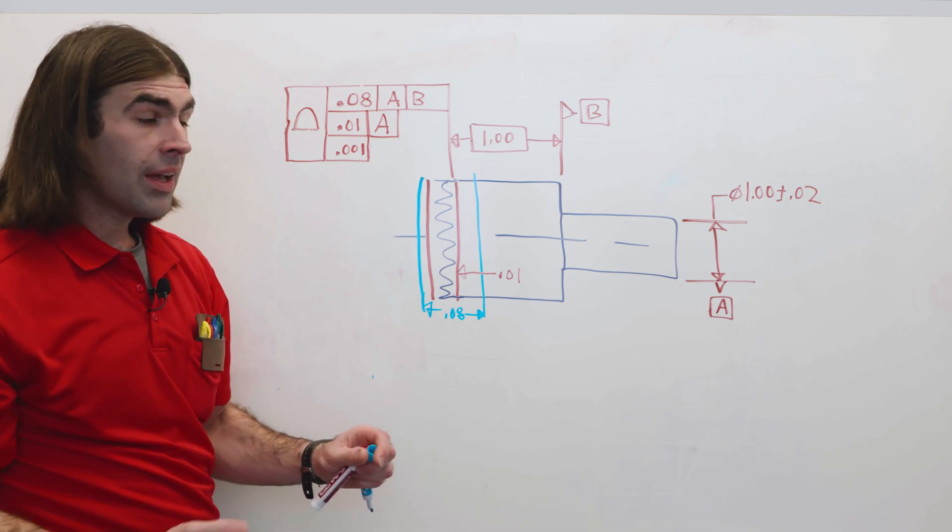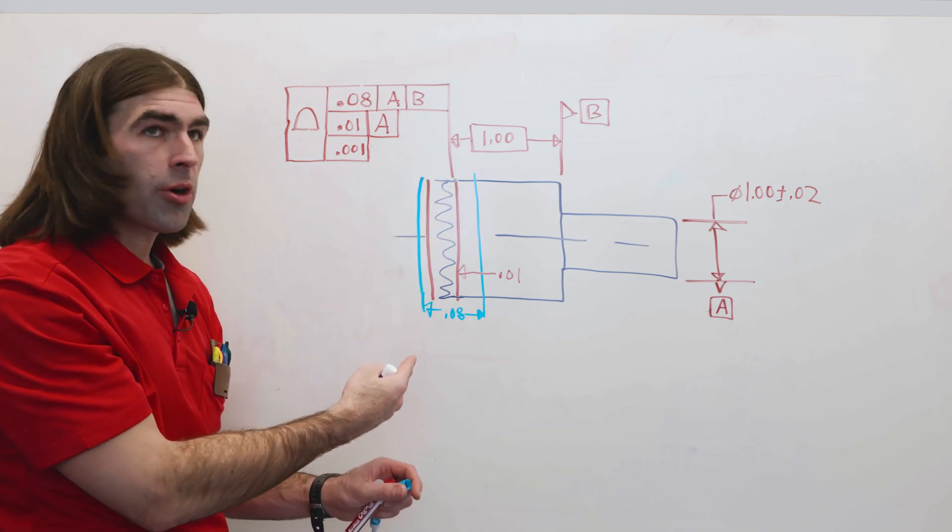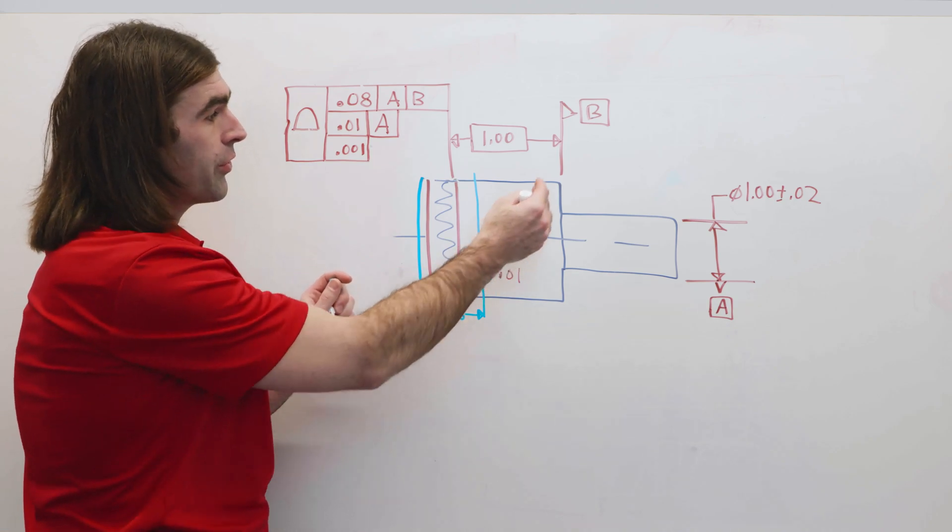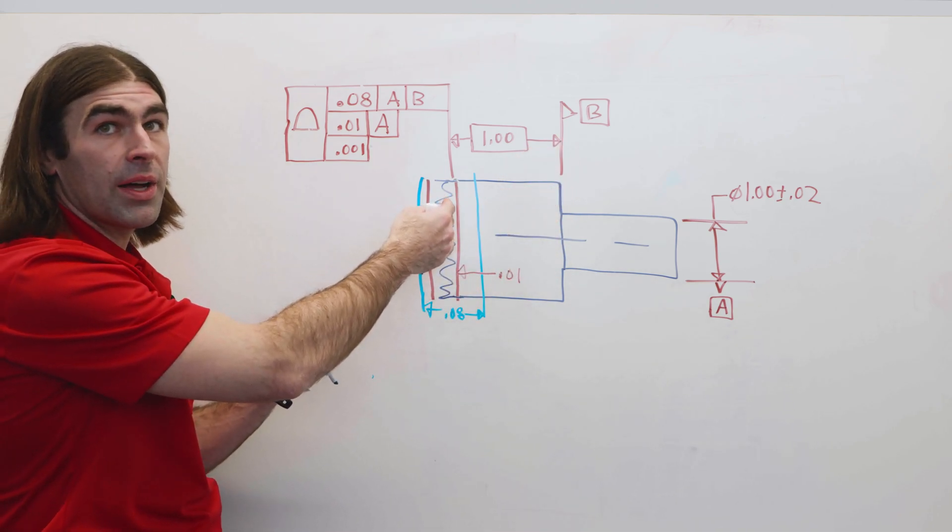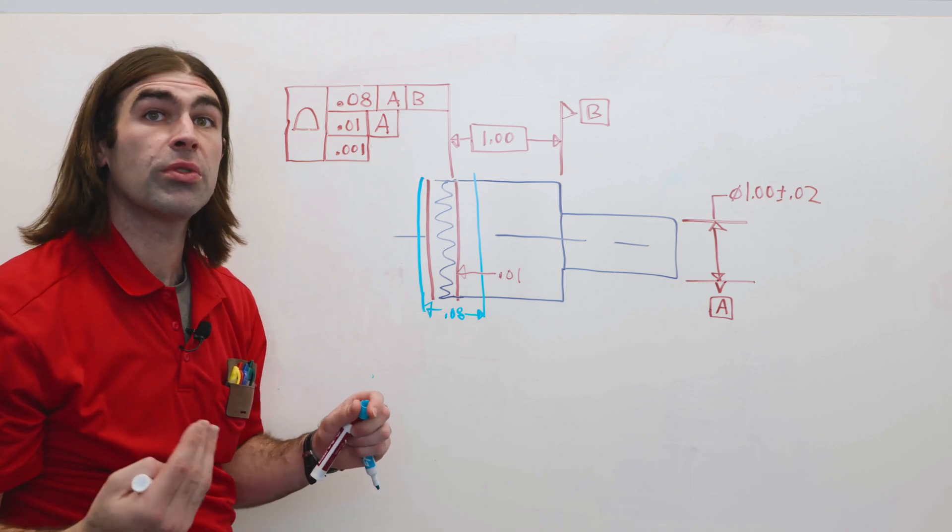What this does manufacturing-wise, it's generally easy to make things perpendicular. It's more difficult to get a register off of here and come out one inch and make it perfectly to size.